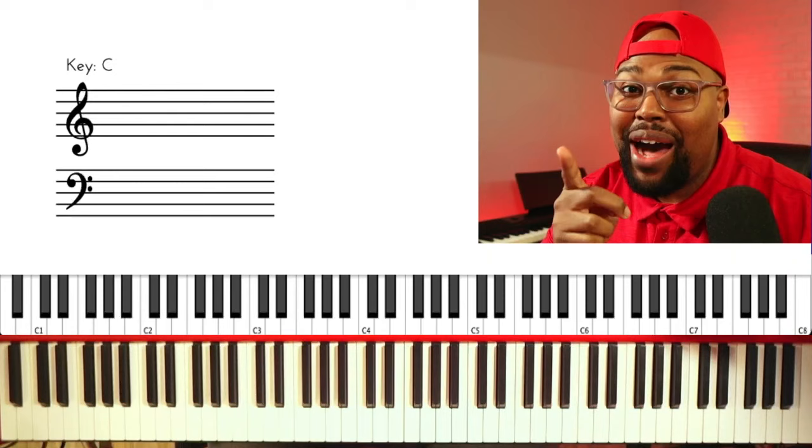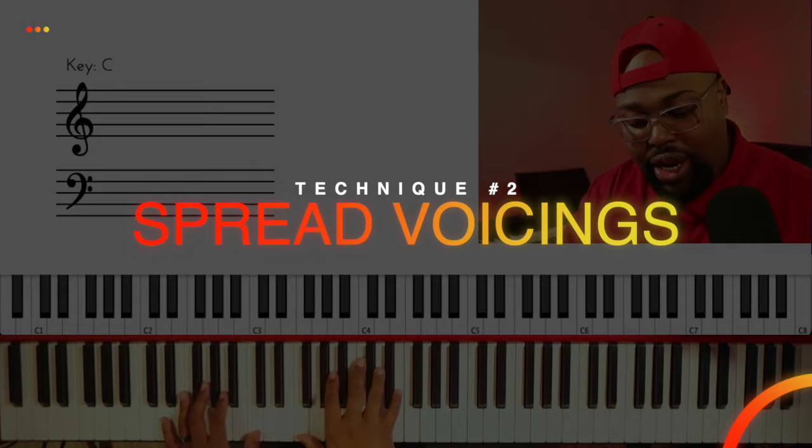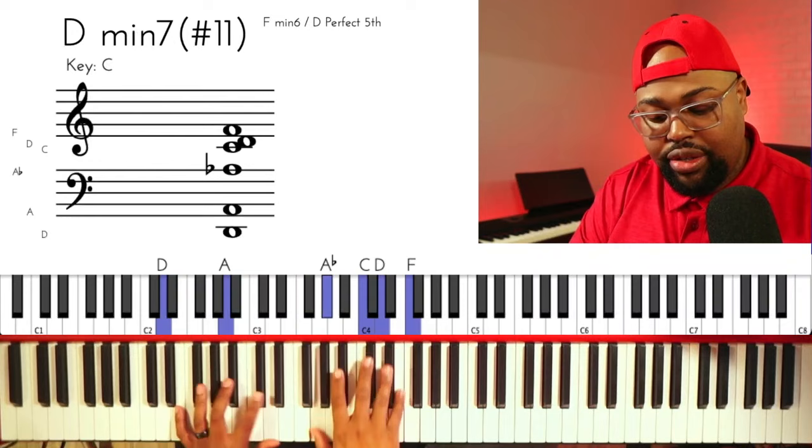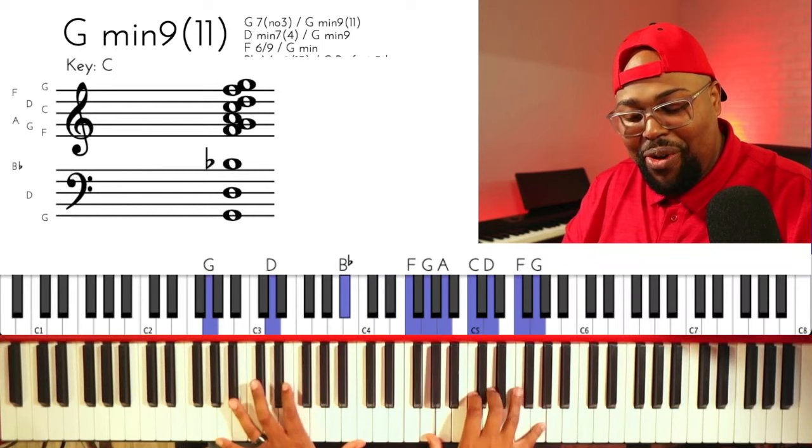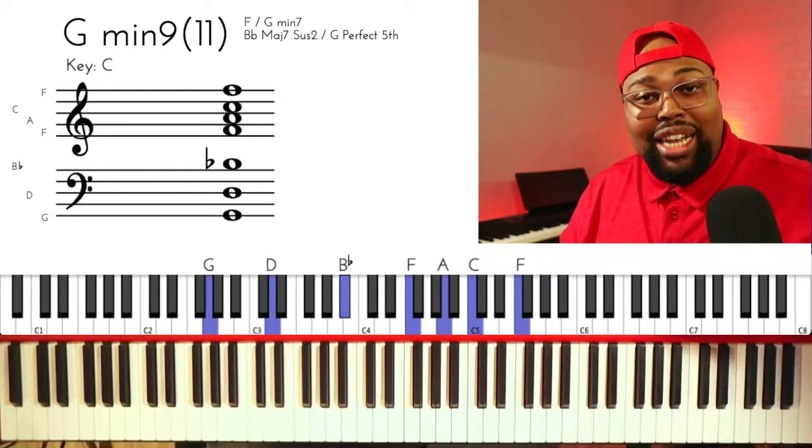So here's the second technique that Kevin Bond uses that you need to have. It's going to be spread voicing. So check it out. When he goes, I've come through many hard trials. Right here. This movement right here. This movement is so beautiful. And it sounds refreshing. But it's really just minor 9-11 chords.